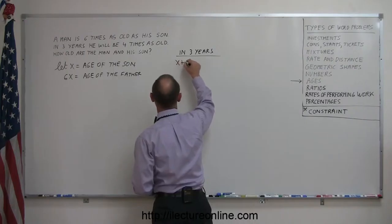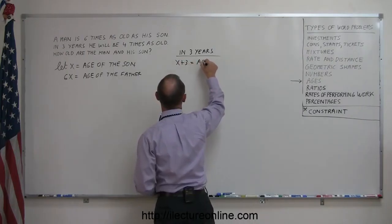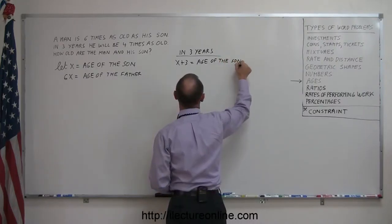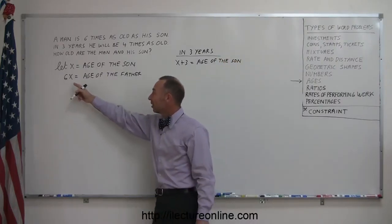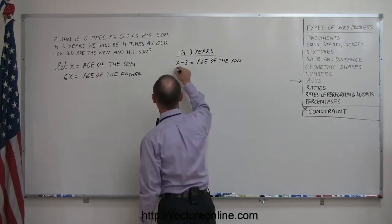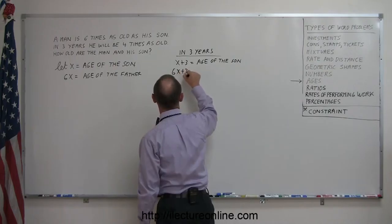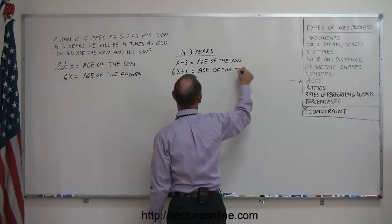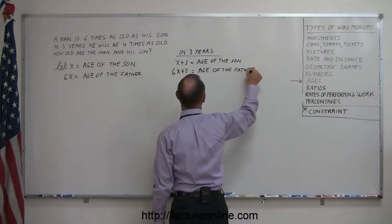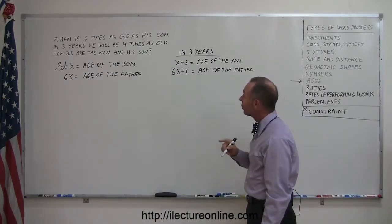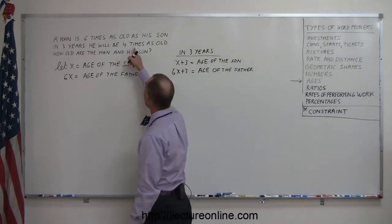That means x plus three will be the age of the son, and if 6x is the age of the father today, then in three years he'll be 6x plus three years old in terms of x. Okay, now we're ready to go.